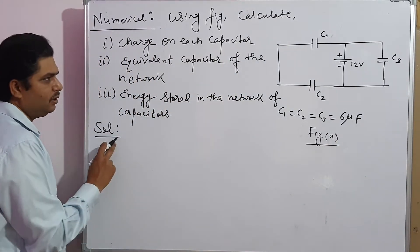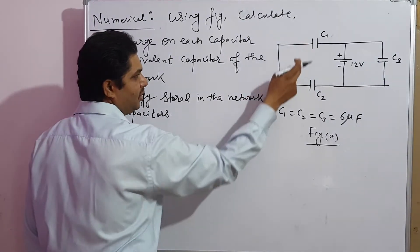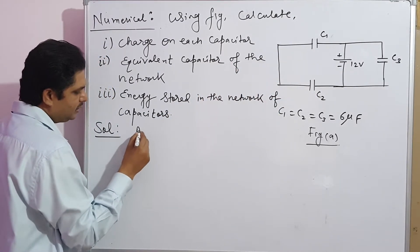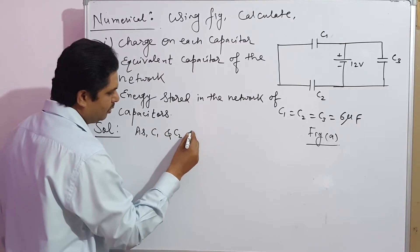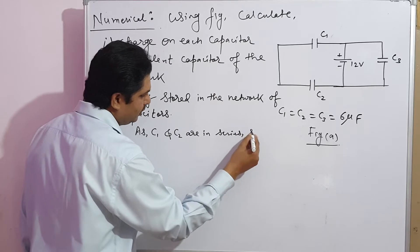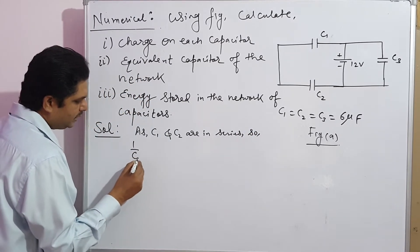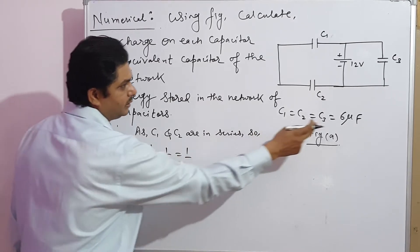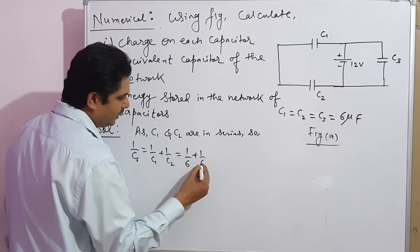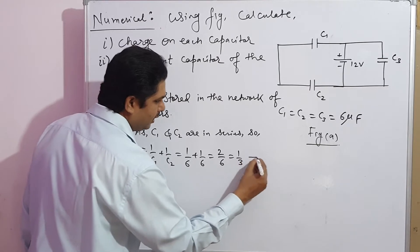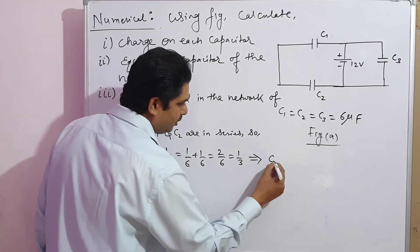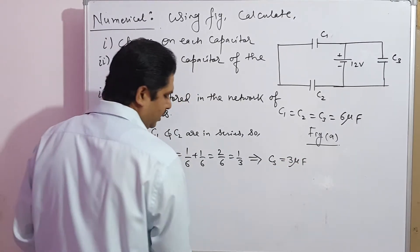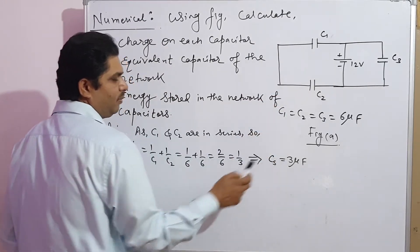Now let us see the solution. First, find the equivalent capacitance of C1 and C2. C1 and C2 are in series, so 1 by Cs equals 1 by C1 plus 1 by C2, which is 1 by 6 plus 1 by 6 equals 2 by 6 equals 1 by 3. This means Cs equals 3 microfarad. So the combination of C1 and C2 is 3 microfarad.